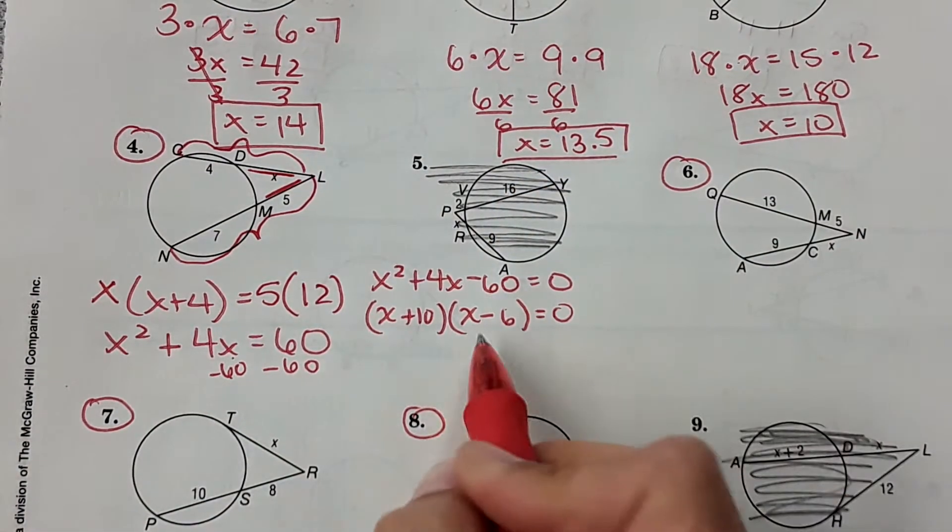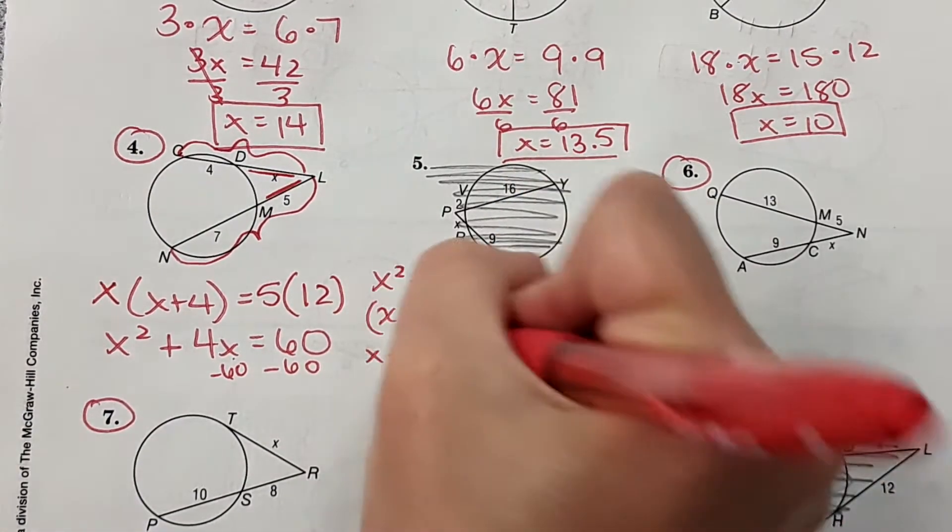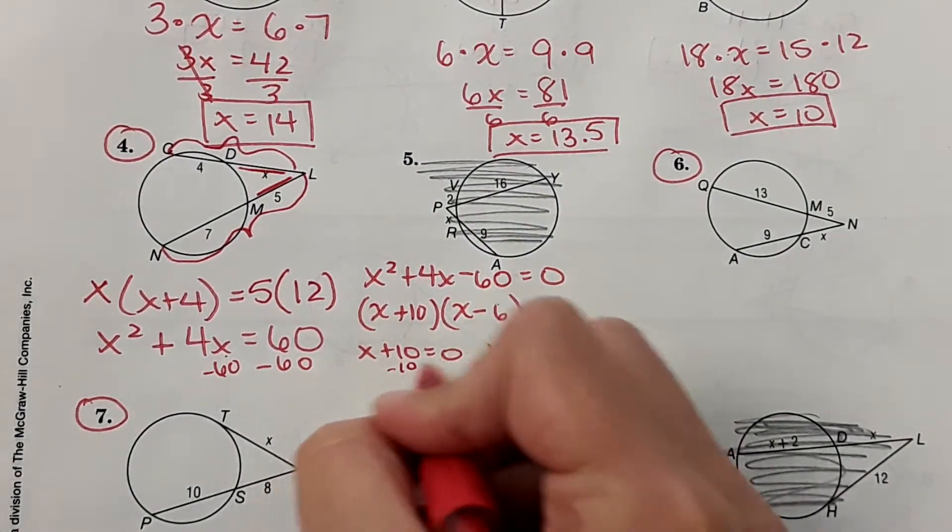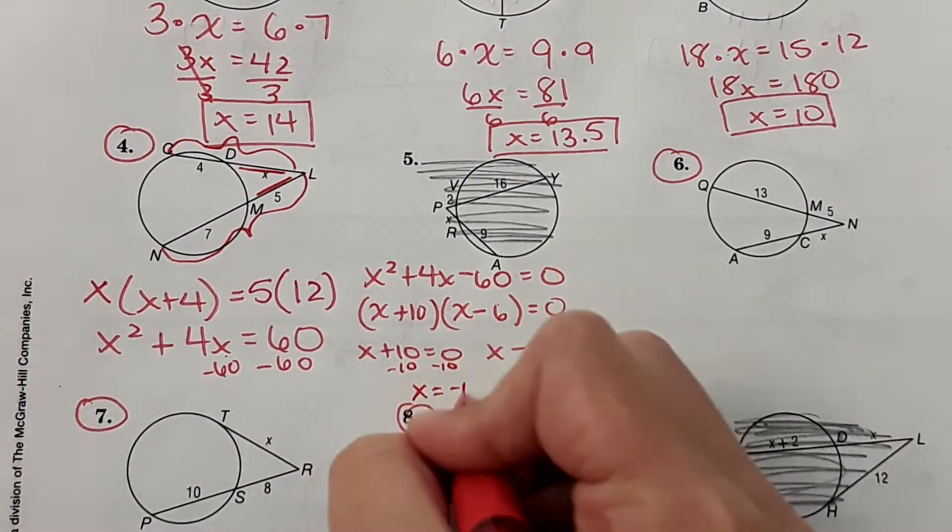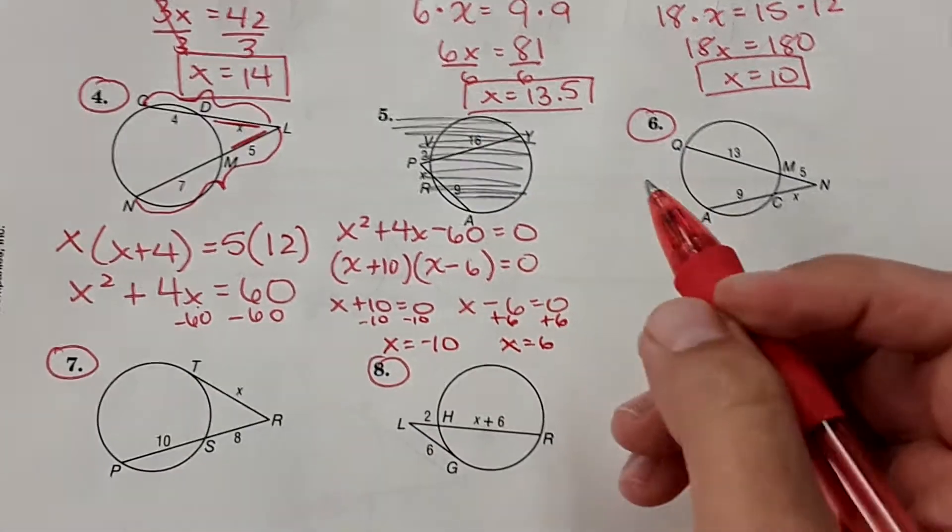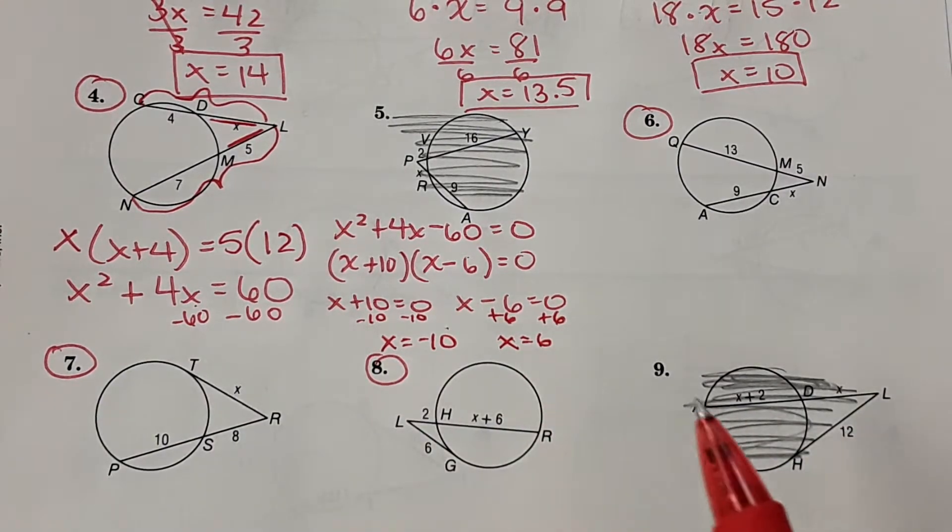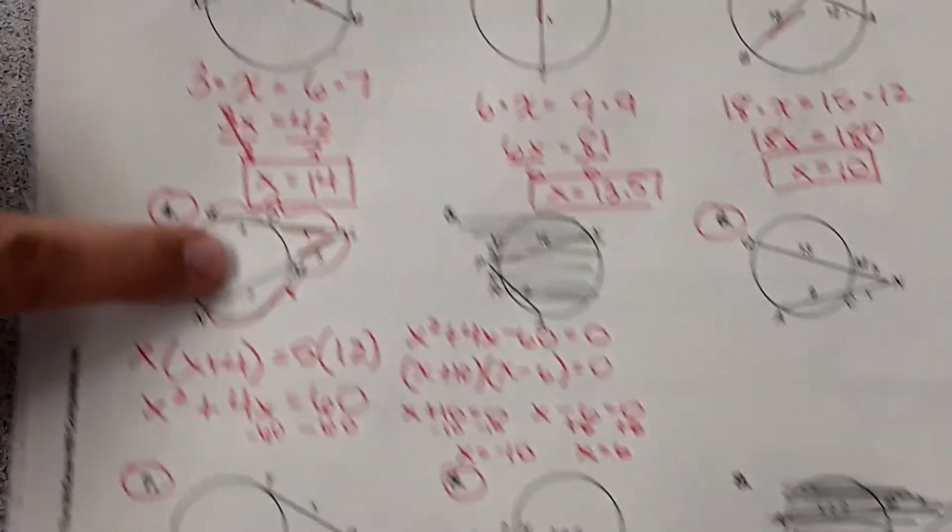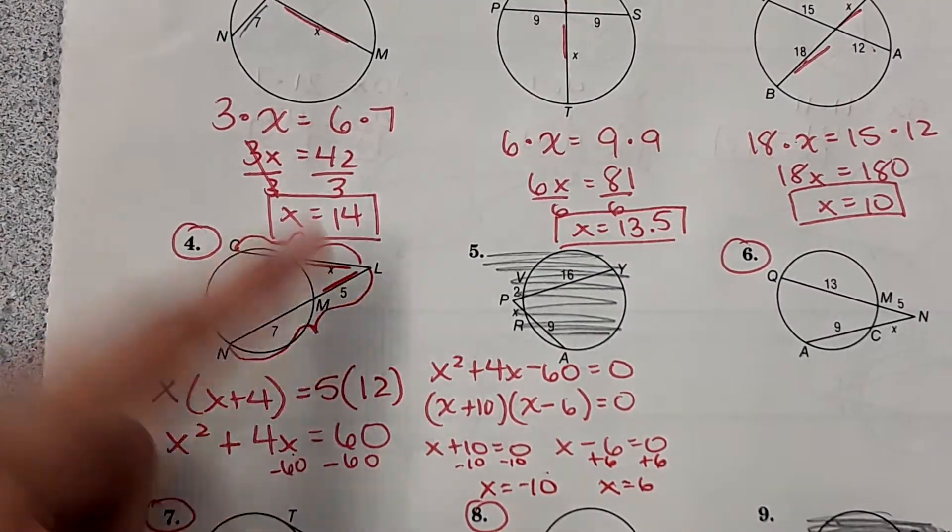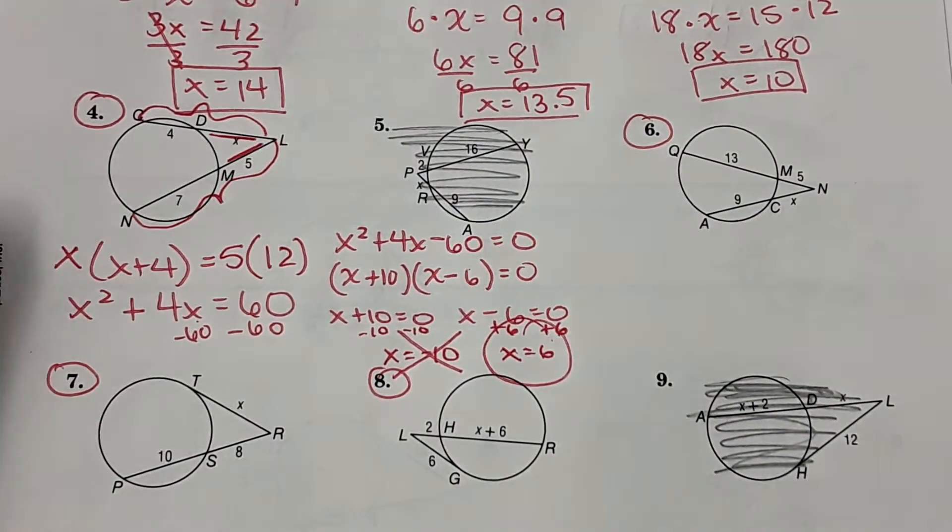Now, if this is equal to 0, then one of these has to equal 0. So we're going to set both of these equal to 0 and solve for x. And I get two answers. x equals negative 10 and x equals 6. In this situation, it can't have a negative distance. That length has to be a positive. So it's 6. x equals 6 is your answer.